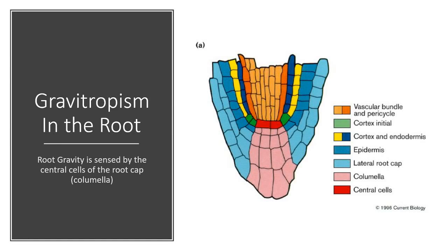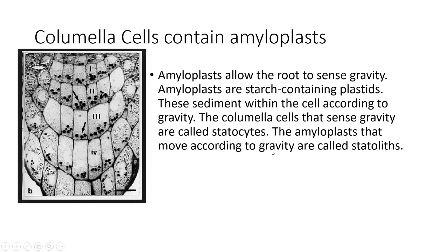How do the roots of plants detect gravity? The main structures in the root that detect gravity are called the columella cells, and they're over here in pink. This is a part of the root cap, so if you imagine this is the root cap.